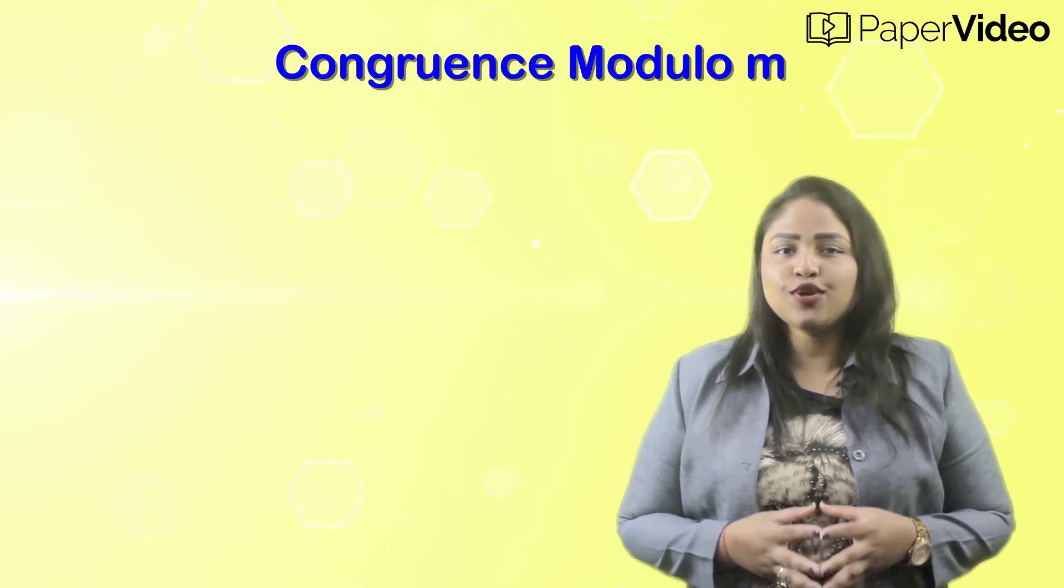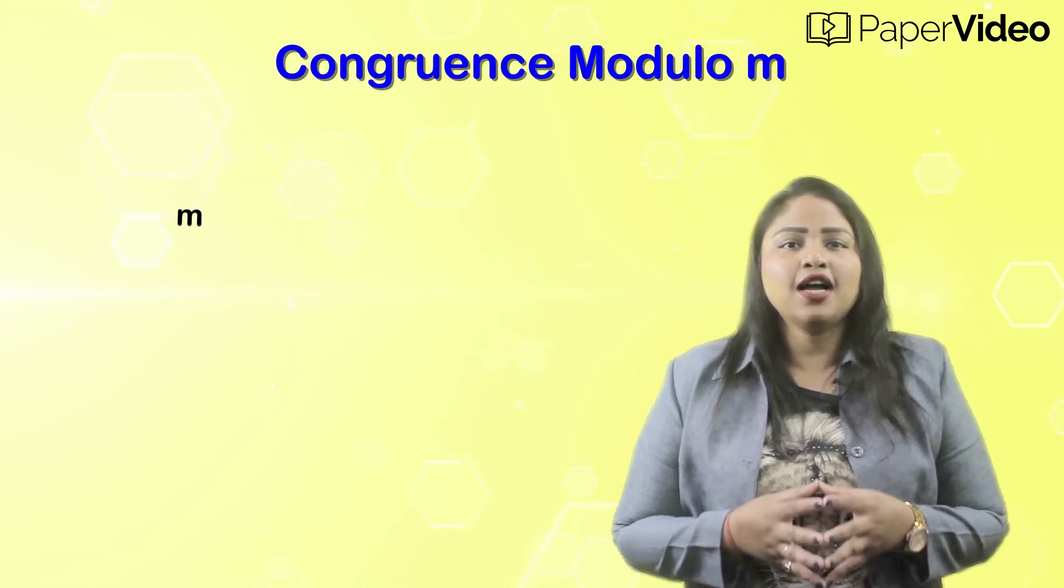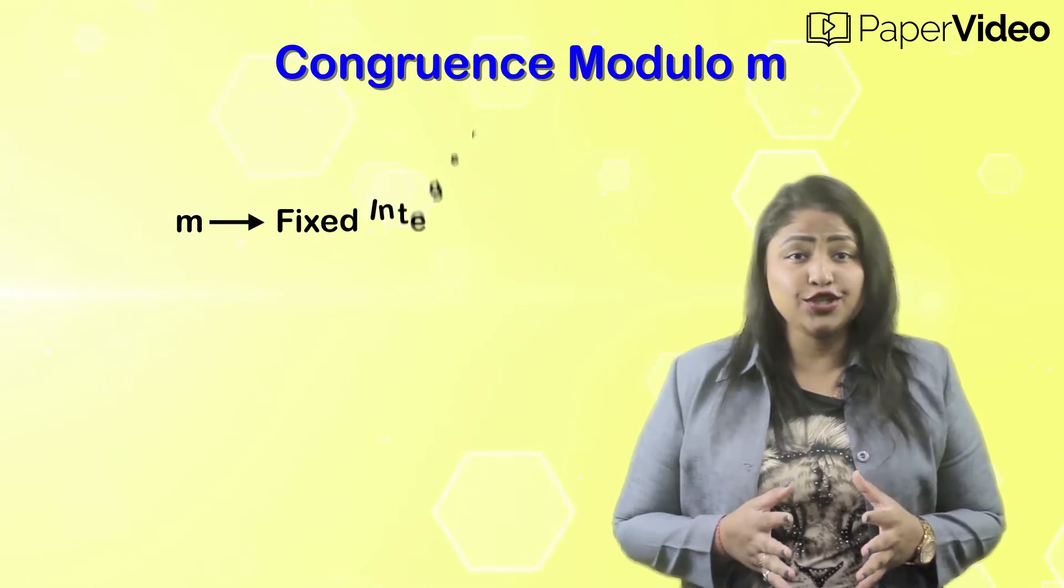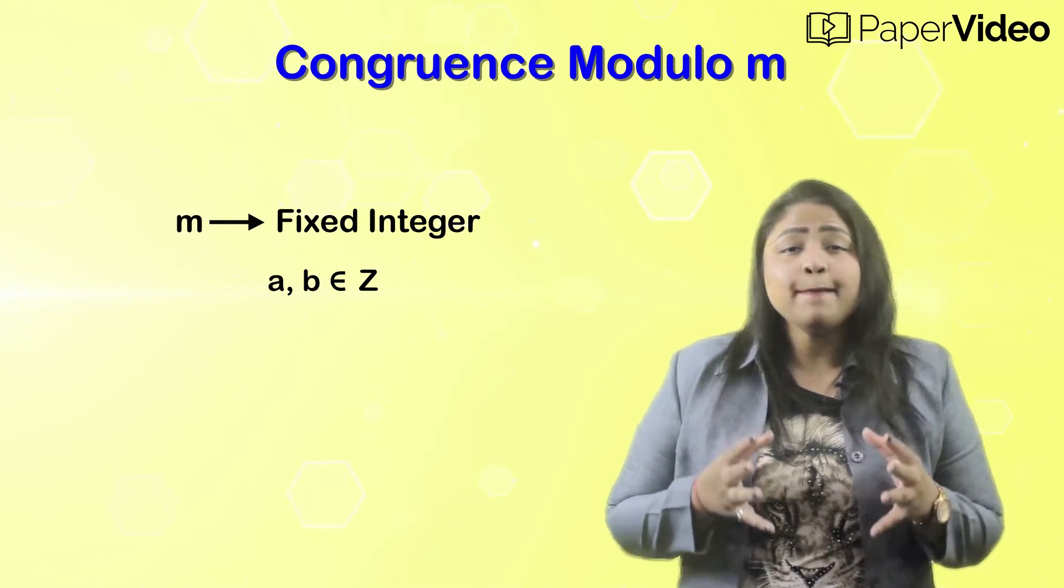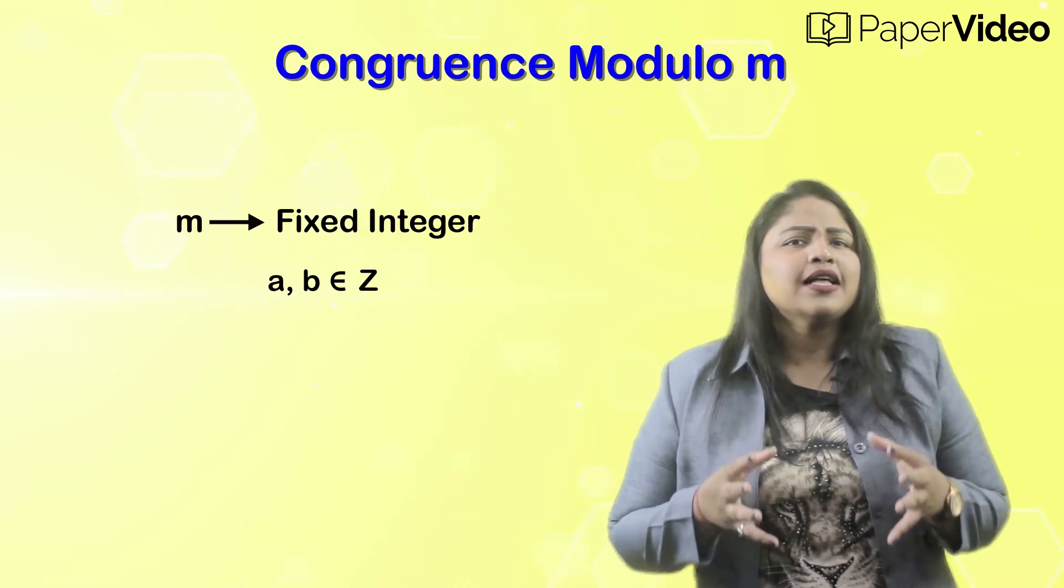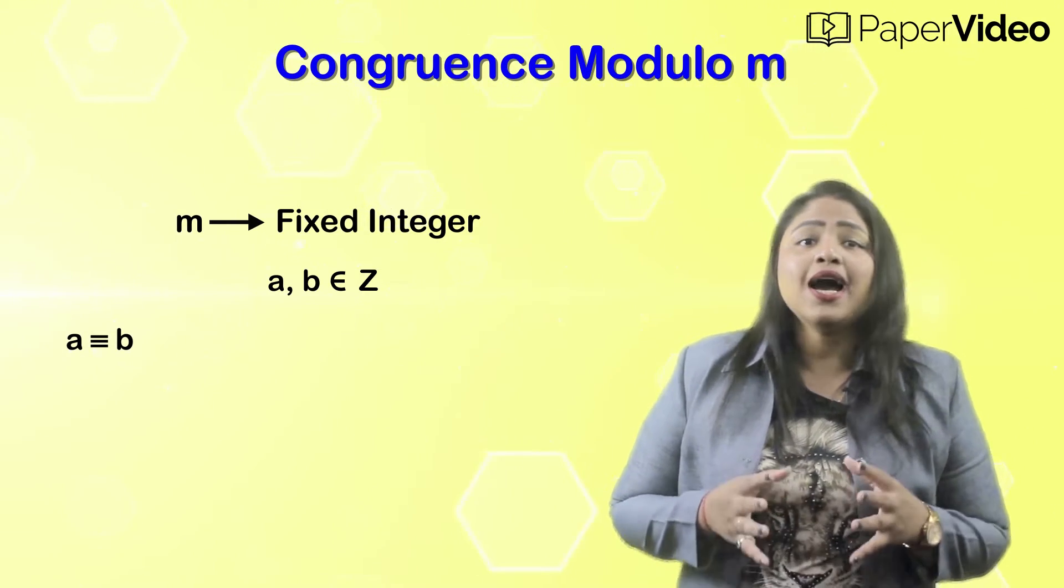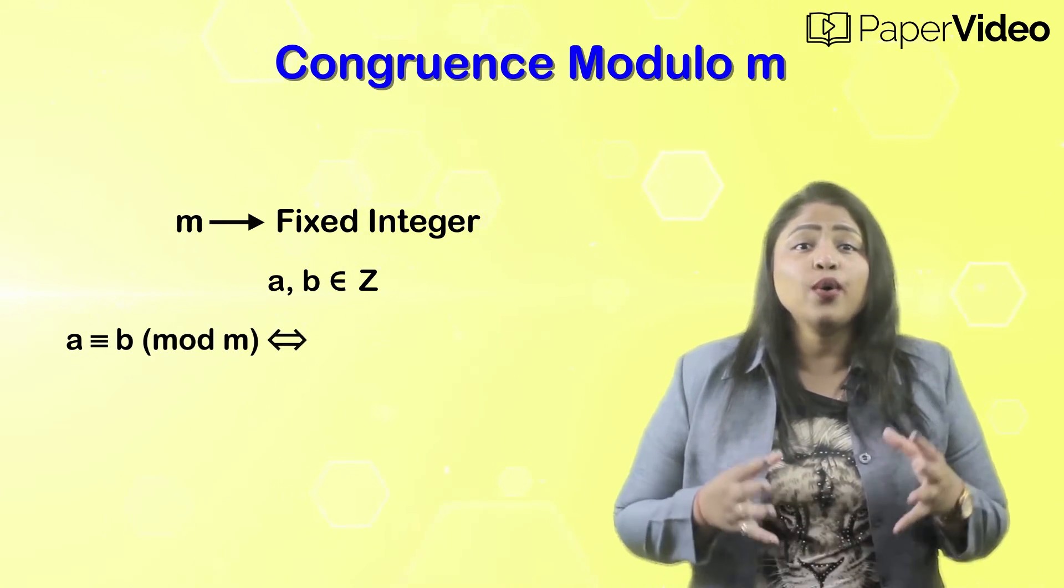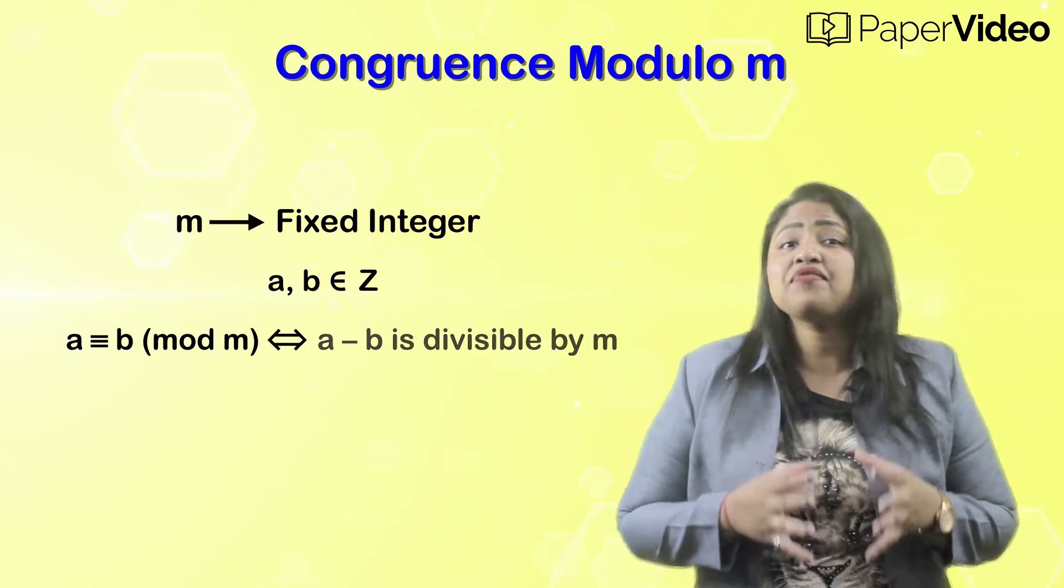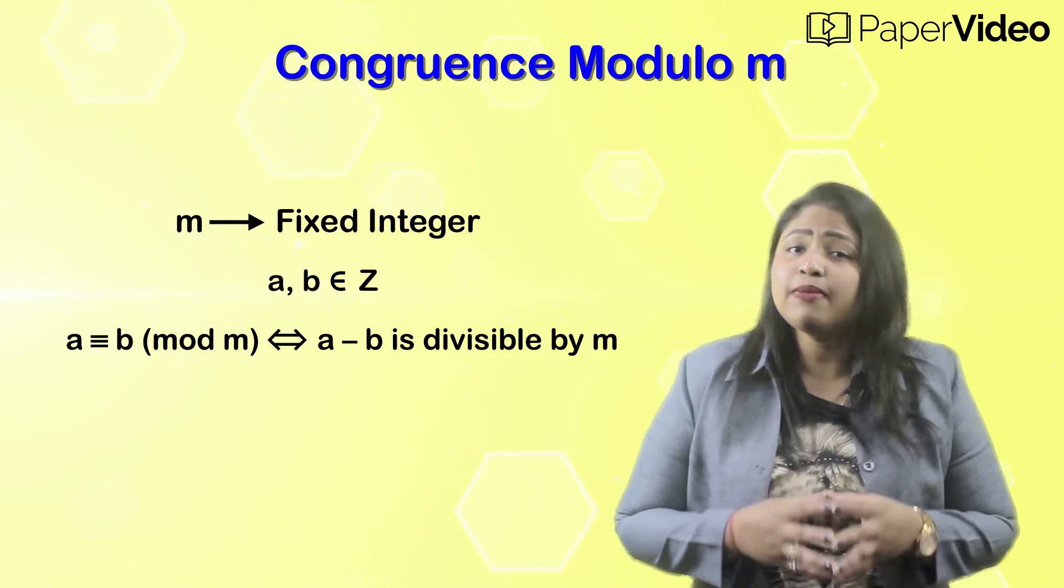How do we define congruence modulo M? Let M be an arbitrary but fixed integer. Let A and B be two integers. Then integers A and B are said to be congruent modulo M if and only if A minus B is divisible by M.